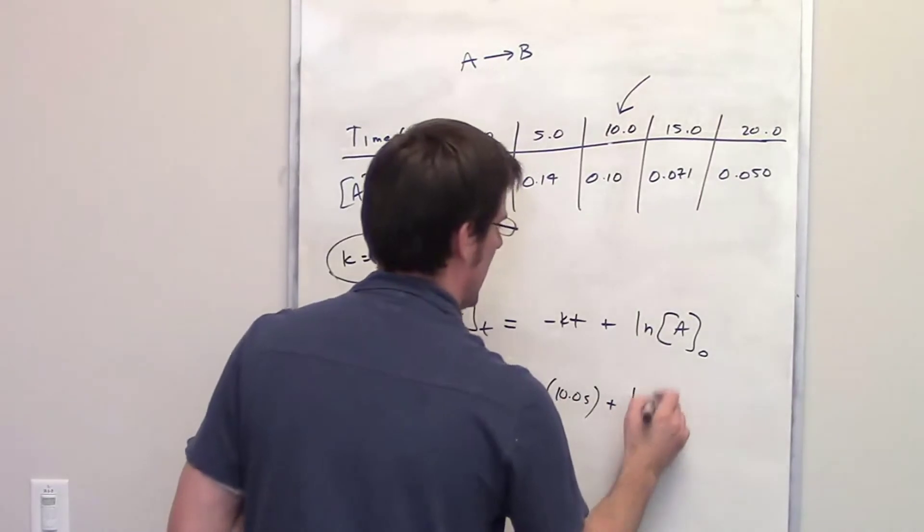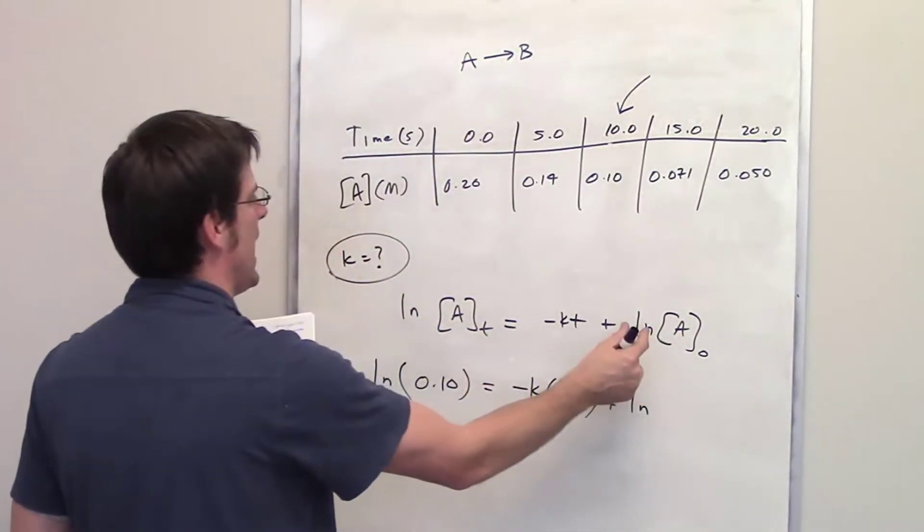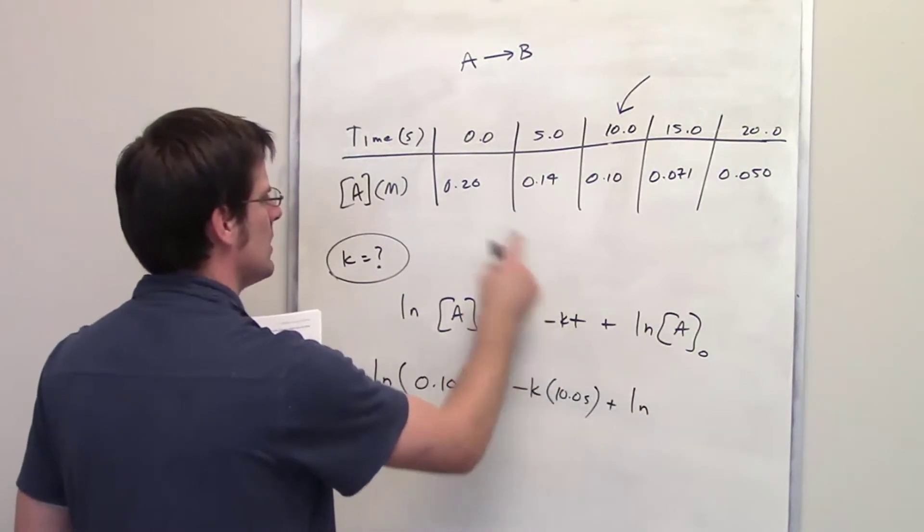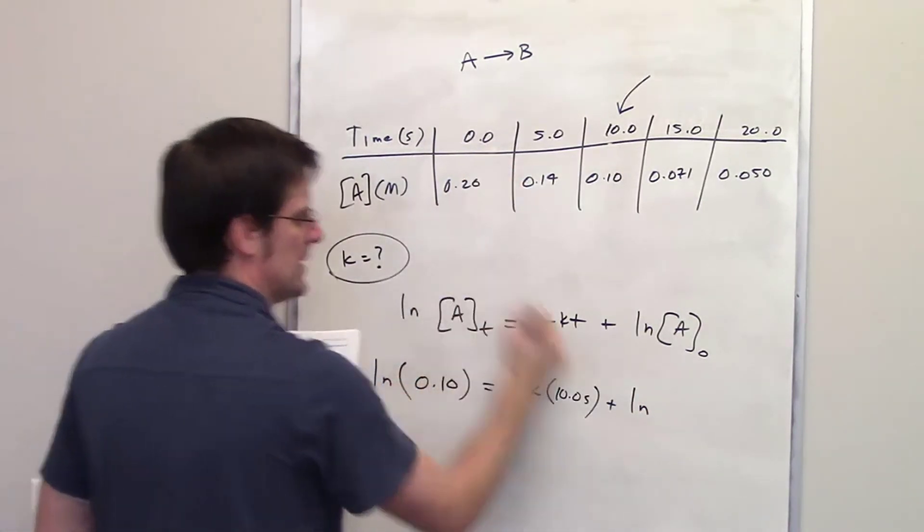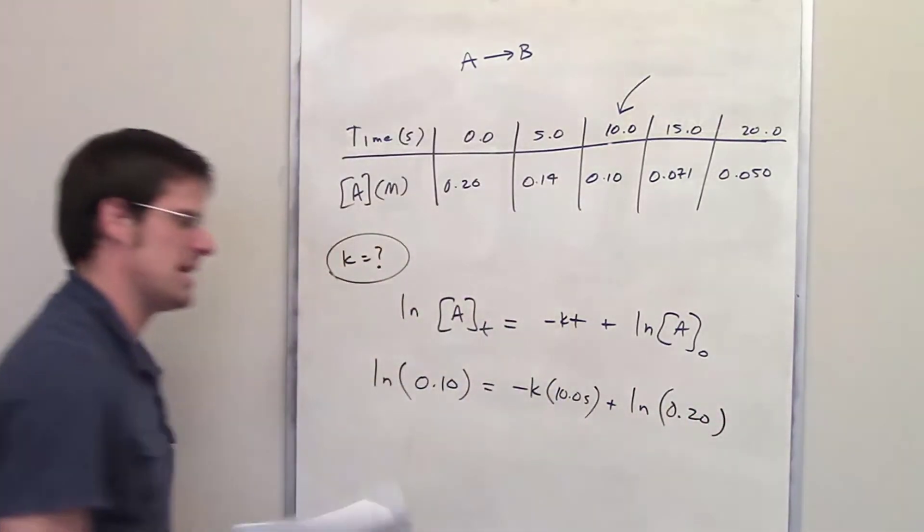Now, what does ln of A sub 0 mean? Well, A sub 0 is the concentration of A at time 0. What is the concentration of A at time 0? It's 0.2. So I'm going to go ahead and write down 0.20. Does that make sense?